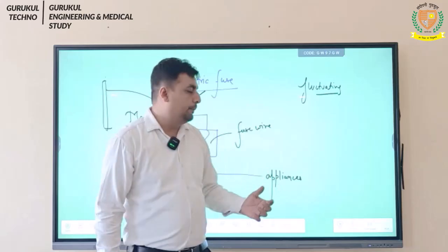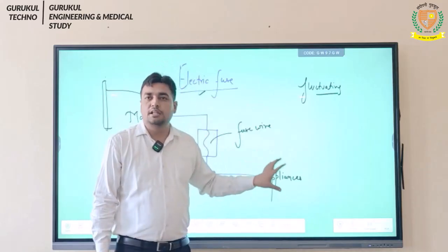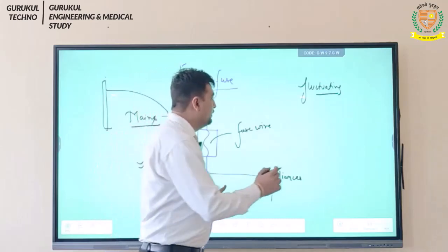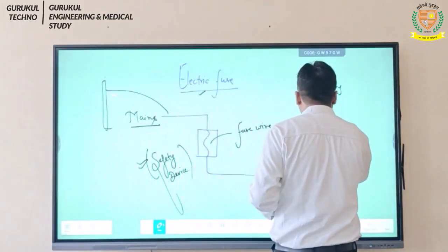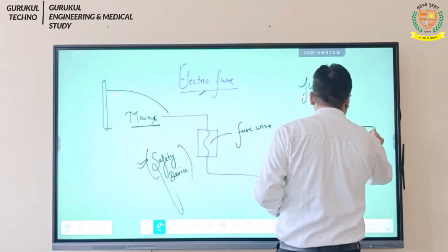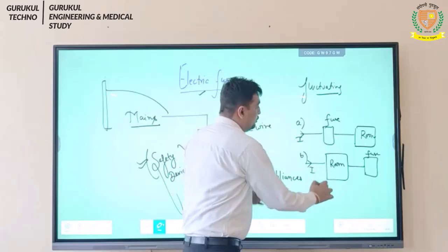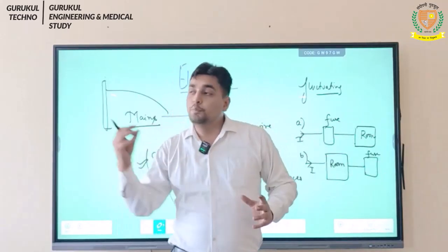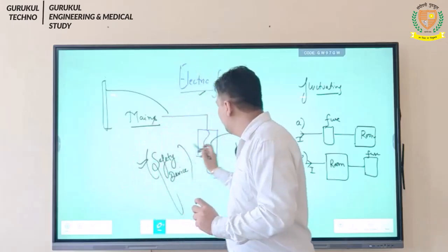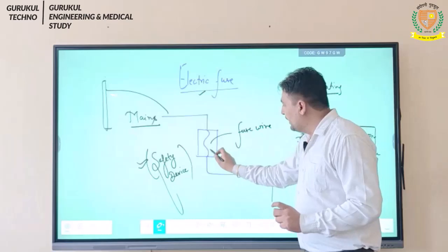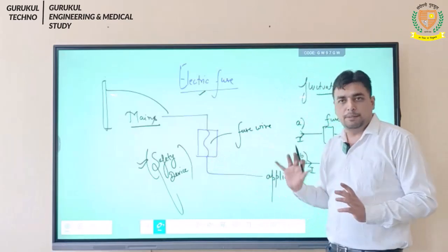Like in your room — your fans, AC, TV, fridge. So obviously the fuse is placed first, before the appliances. The current is coming in, we put a fuse inside, there is a wire inside the fuse, and from there the current goes to the appliances.